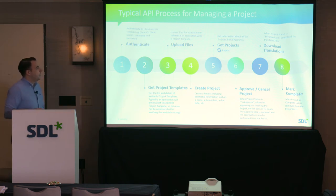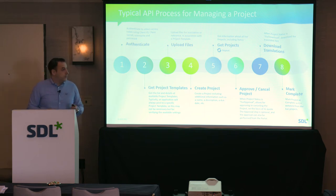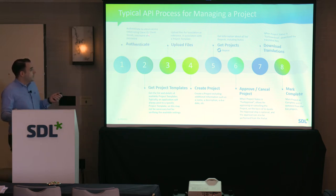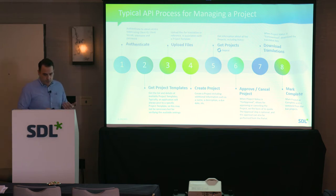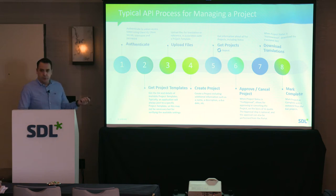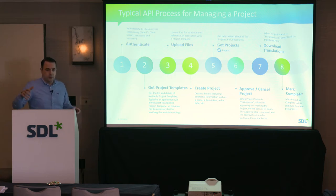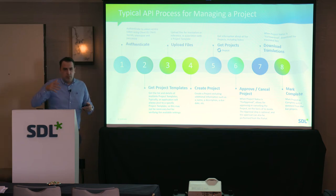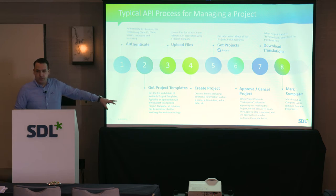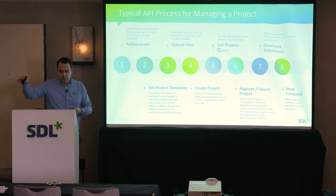In terms of the typical process for managing a project using the API: the first step is authentication — you authenticate using a token, getting a client ID and secret or a username and password. You then retrieve a list of project templates, which are dependent on user access. As a localization department, you can pre-provision project templates and offer them to your business units.